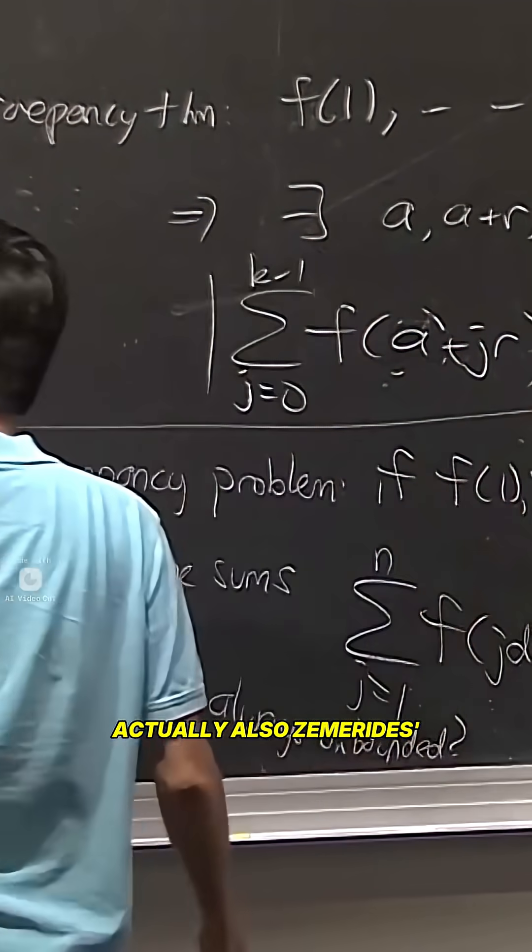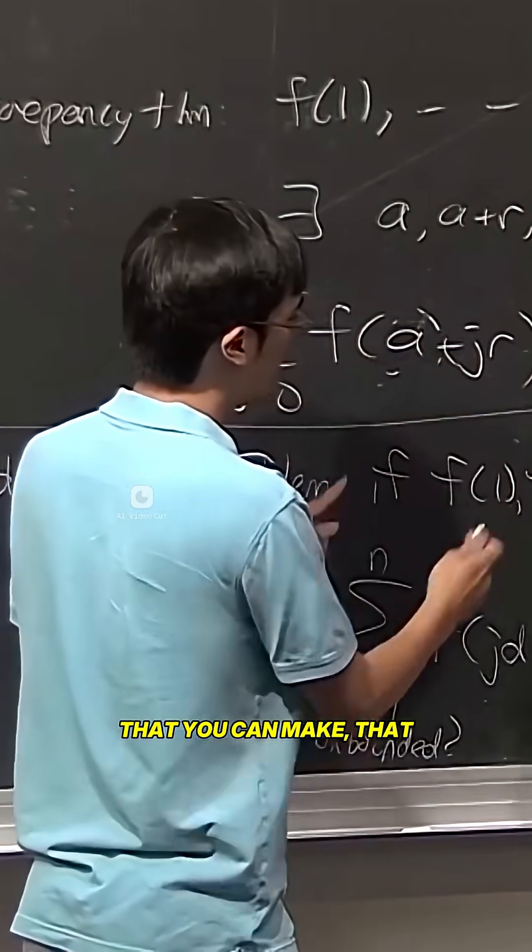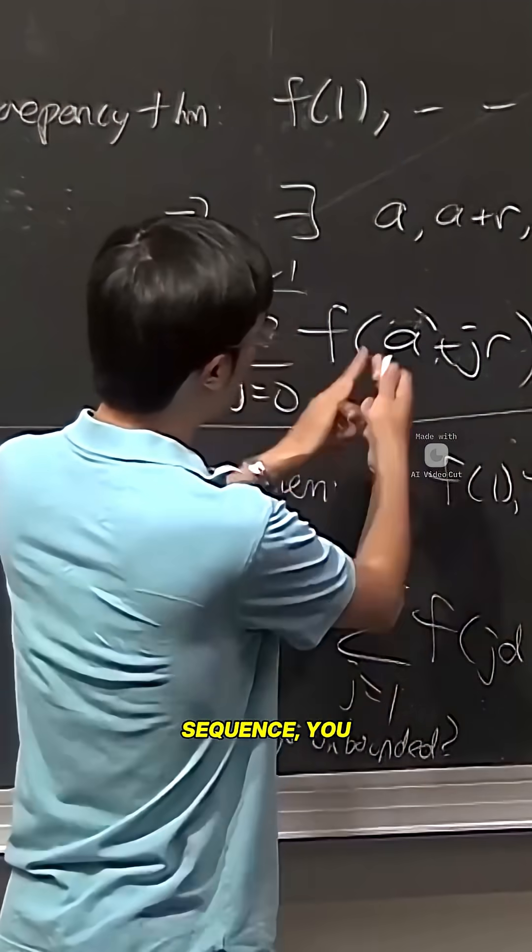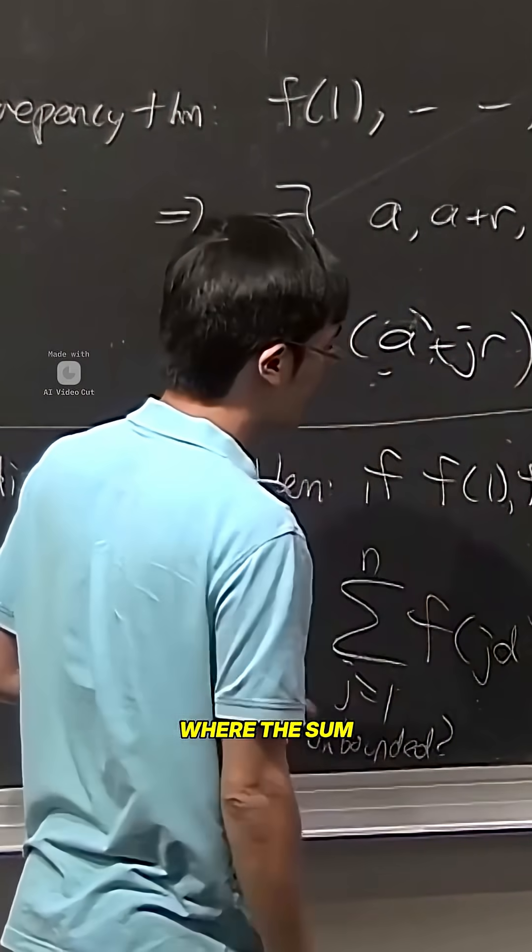So Roth's theorem, or actually also Szemerédi's theorem, or Van der Waerden's theorem—any of these theorems tell you that if you have a long enough sequence, you can find some arithmetic progression where the sum is large.